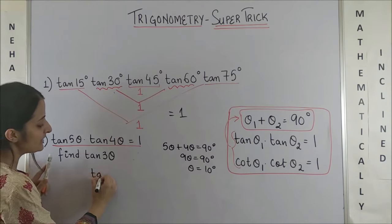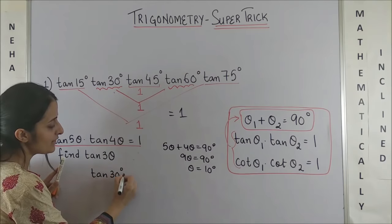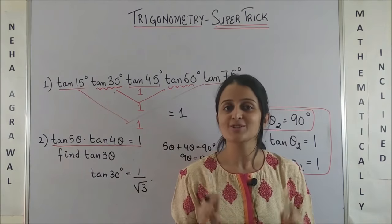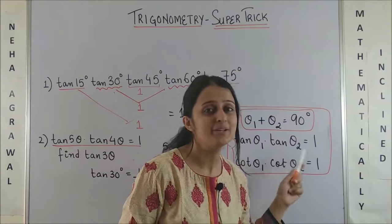So, here my tan 3θ means we are trying to ask what is tan 30° and bingo! It is 1/√3. Wasn't this so quick with the simple logic?